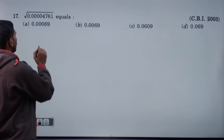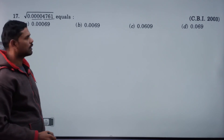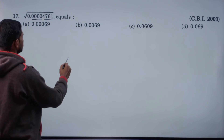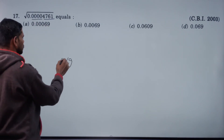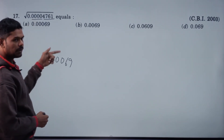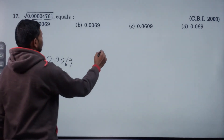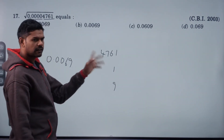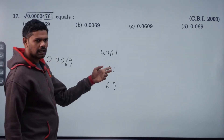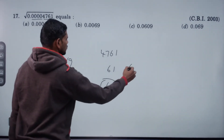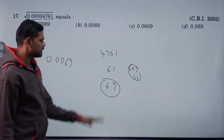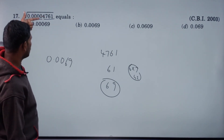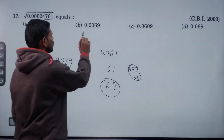Root of 0.000004761. Answer: root of 4761 is 69. There are 8 decimal places in 0.000004761, so 4 decimals in the answer. Answer is 0.0069.